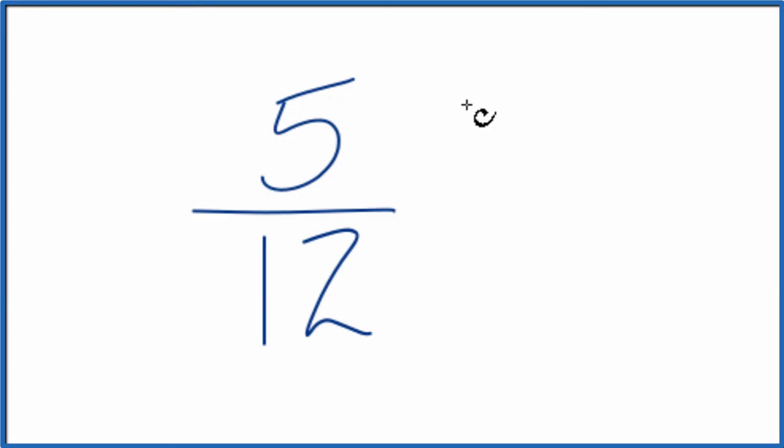So let's just list the factors. 1 times 5, that would give us 5, and those are the factors of 5.